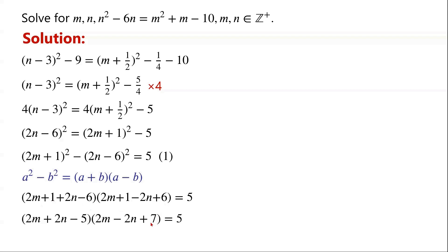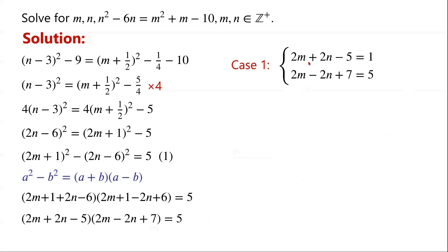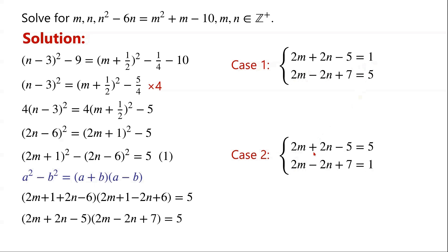So we have (2m plus 2n minus 5)(2m minus 2n plus 7) equals 5. Since m and n are positive integers, the factors (2m plus 2n minus 5) and (2m minus 2n plus 7) must be factors of 5. For case 1: (2m plus 2n minus 5) equals 1 and (2m minus 2n plus 7) equals 5.